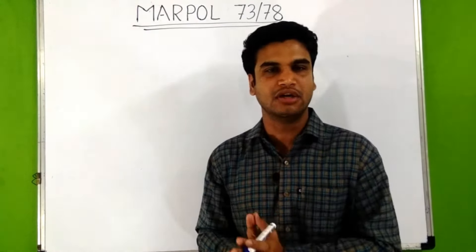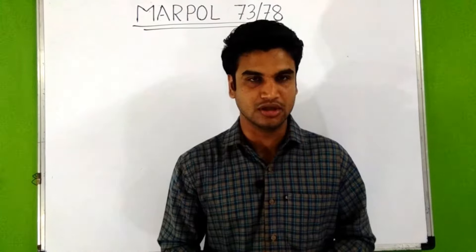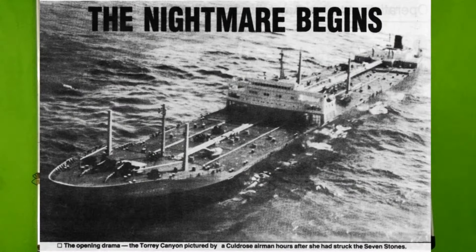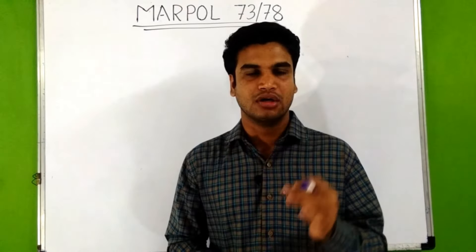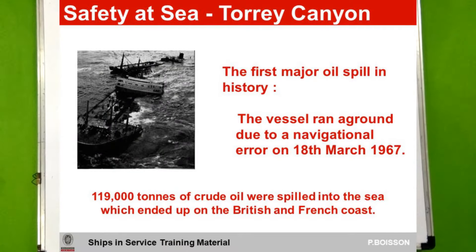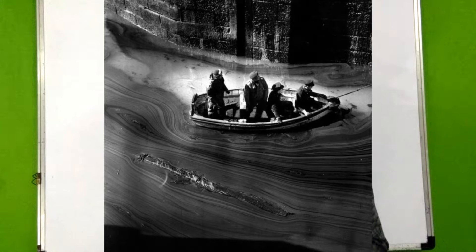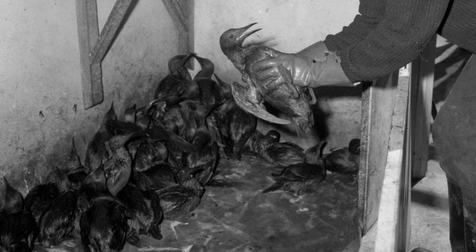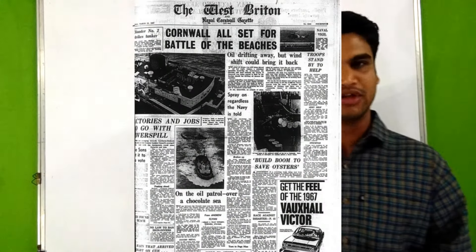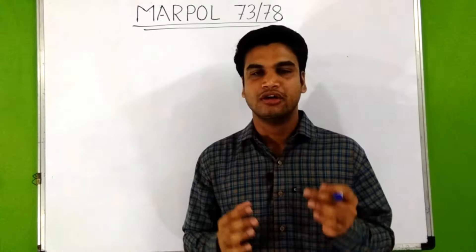One such case history is the Torrey Canyon oil spill, which was one of the world's most serious oil spills. On 18th March 1967, a supertanker Torrey Canyon ran aground on rocks off the southwest coast of the United Kingdom, spilling near about 25 to 36 million gallons of crude oil. It was the UK's worst oil spill to date, causing massive marine pollution and environmental damage with near about 20,000 marine birds contaminated. This incident fueled intense anger around the world, and the cost of cleanup was about 5 million US dollars.